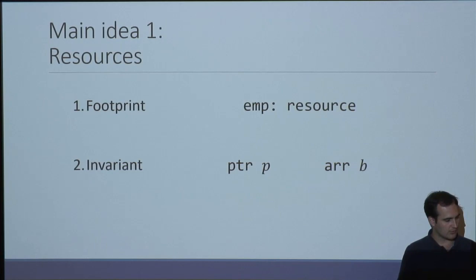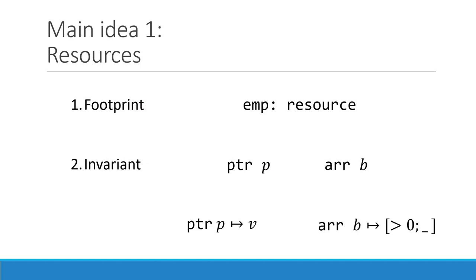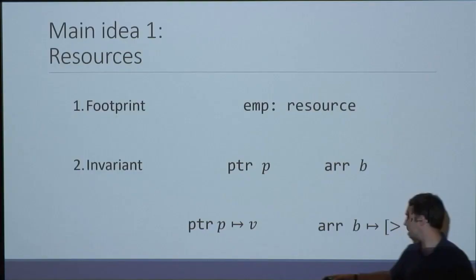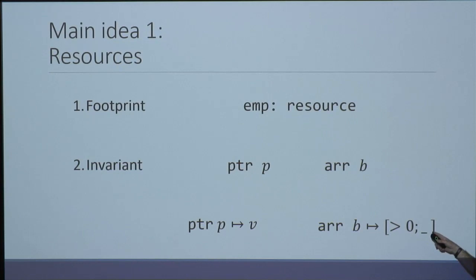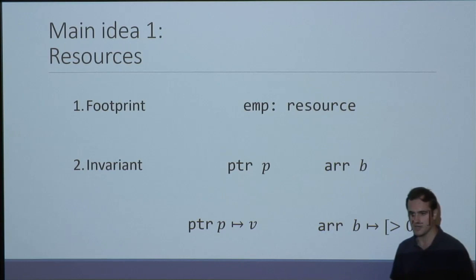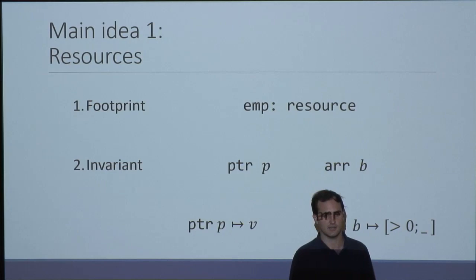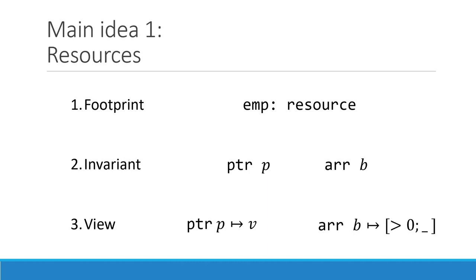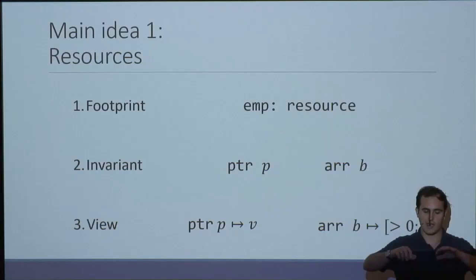So now we have the basic building blocks. But we can say richer things about resources — for instance, we can talk about their contents. We can say pointer P points to value V, or array B points to an array of size two whose first cell contains a value greater than zero. You can use this resource language to actually specify what's happening inside a particular heap fragment. We attach a third component to resources, which is the view — a high-level description of what the contents of the heap are associated to this resource.